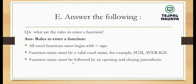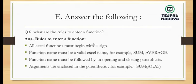Rule three: the function name must be followed by an opening and closing parenthesis. The arguments of the function are enclosed inside the parentheses. For example, =SUM(A1:A5) — the arguments A1 to A5 are inside the parentheses. The arguments must not go outside the parentheses; they must be enclosed within them.